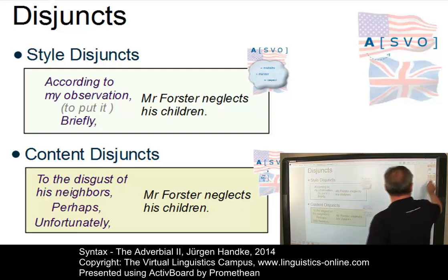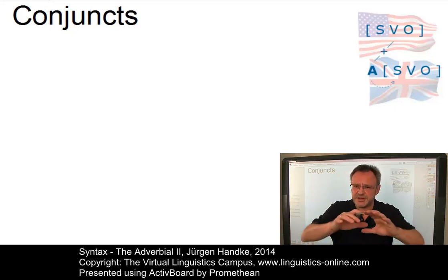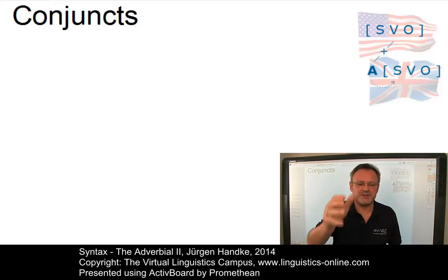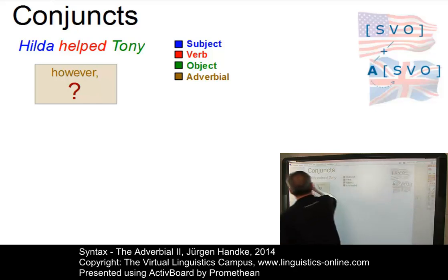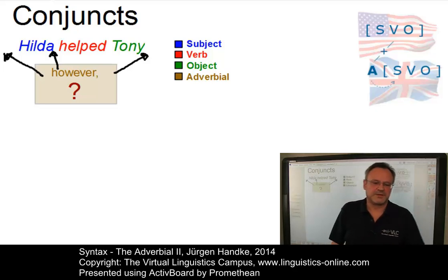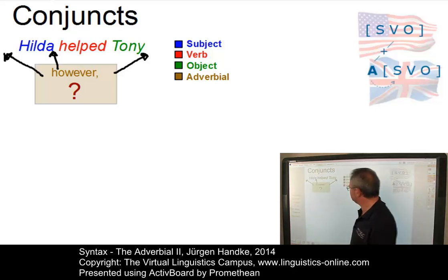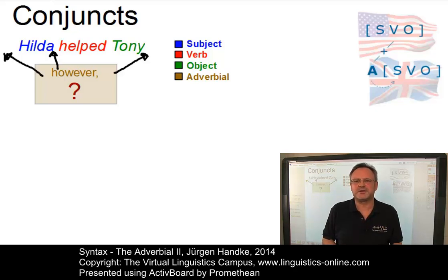Let's finally discuss conjuncts. Conjuncts serve to conjoin two utterances or parts of an utterance, expressing at the same time the semantic relationship holding between them. Conjuncts occur in all three positions: initially, medially, and finally. For example, with 'Hilda helped Tony' and the conjunct however, we can put it in initial position, add it between subject and verb, or place it finally. Despite this freedom of positioning, most of them occur initially. When they are used finally, their position can somewhat obscure their connective role.